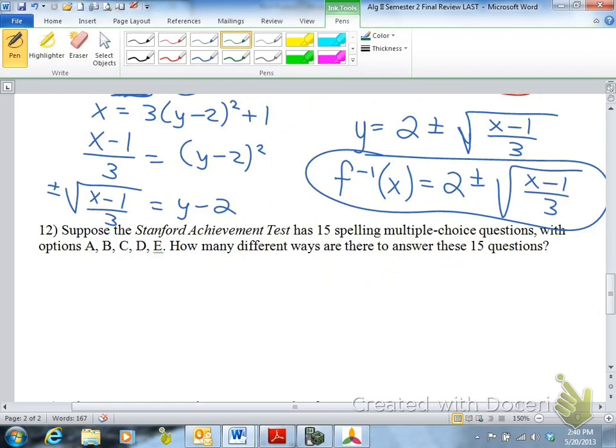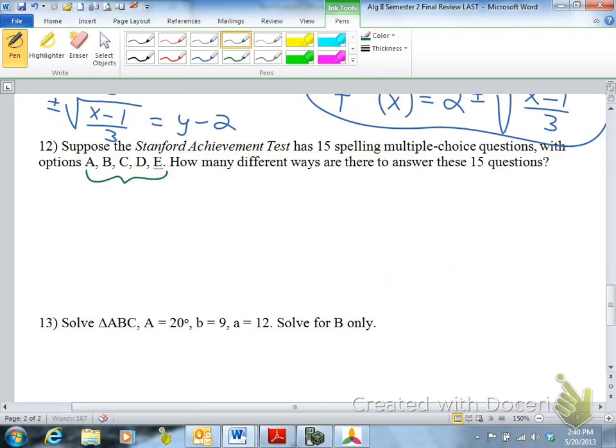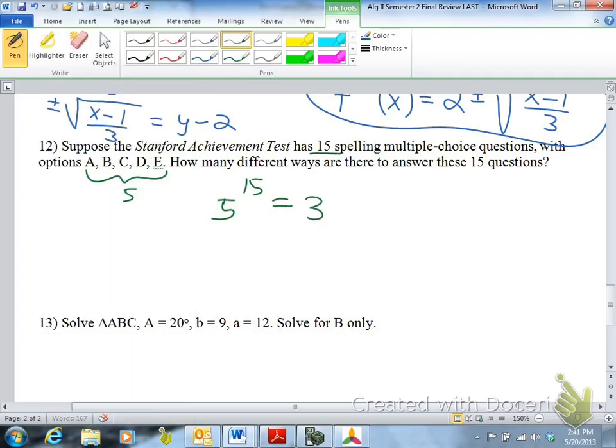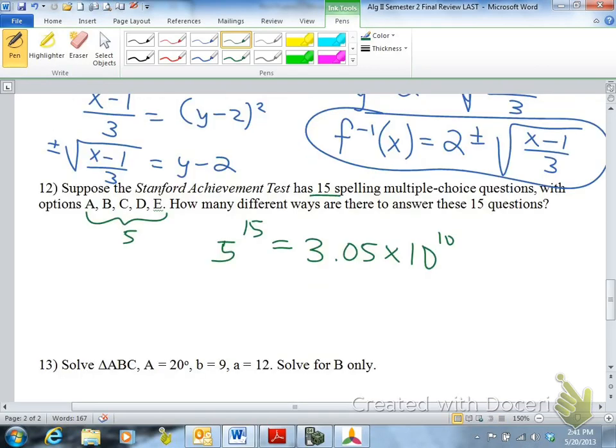Suppose the Stanford Achievement Test has 15 spelling multiple-choice questions with options A, B, C, D, E. How many different ways are there to answer these 15 questions? It would be 5 options. You have 5 options. And you have 15 questions. So it's 5 to the 15th. And you should simplify that to be 5 raised to the 15th. It's 3.05 times 10 to the 10th. So there are a lot of different ways that you could answer all the different questions.